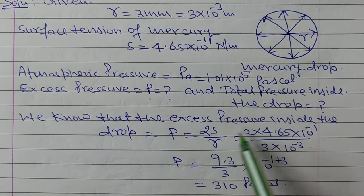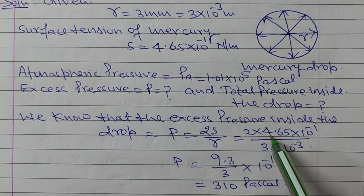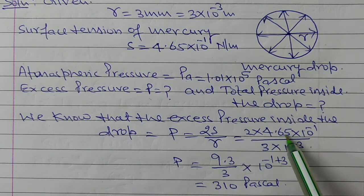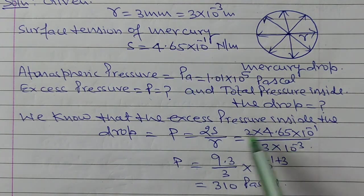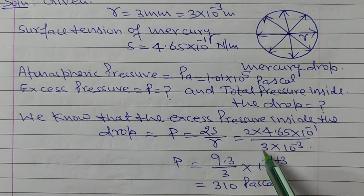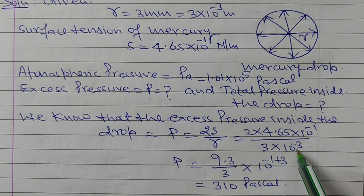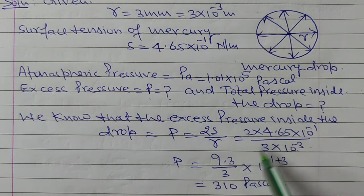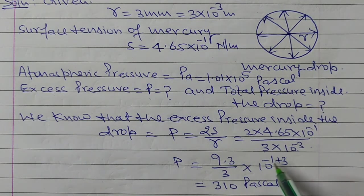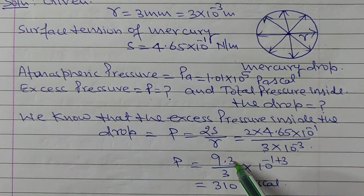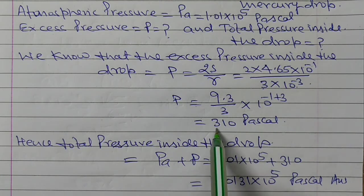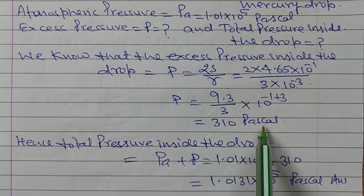Now putting in the values: P = 2 × 4.65 × 10⁻¹ divided by 3 × 10⁻³. Multiplying the numerator gives 9.3, divided by 3. For the powers: −1 in the numerator and −3 in the denominator gives 10⁽⁻¹⁺³⁾ = 10². On solving, this equals 310 Pascal. This is the excess pressure inside the mercury drop.